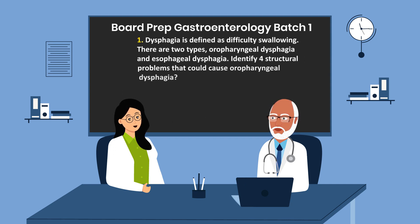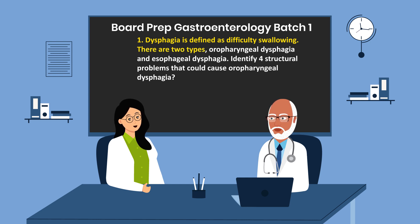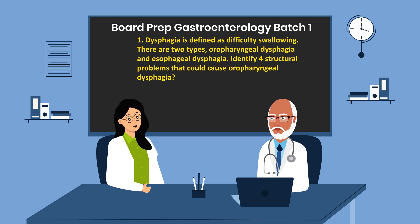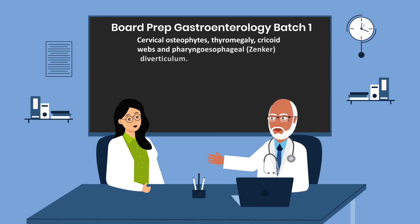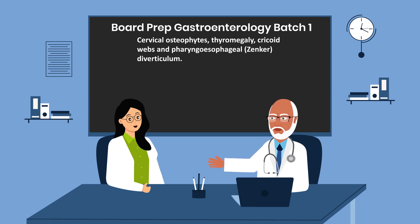Question 1. Dysphagia is defined as difficulty swallowing. There are two types: oropharyngeal dysphagia and esophageal dysphagia. Identify four structural problems that could cause oropharyngeal dysphagia. The answer is cervical osteophytes, thyromegaly, cricoid webs, and pharyngoesophageal diverticulum, which is Zenker's diverticulum.